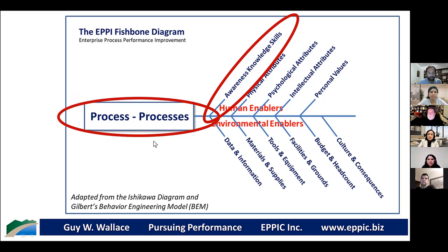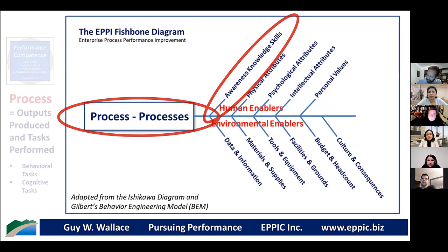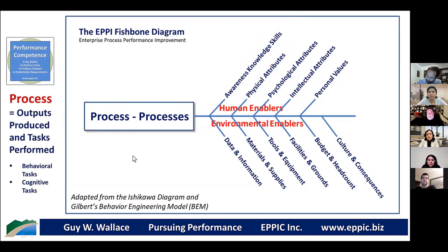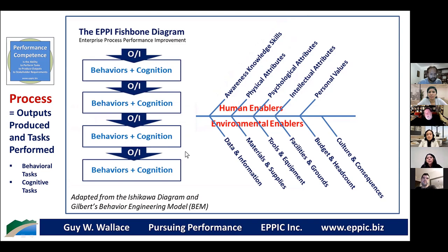How else can we determine what people need to know or be able to do unless we understand the performance context — the process or processes? Over the past four decades, processes have been known as work streams and are more currently known as workflows, but it's all the same thing. There are two types of tasks people perform in processes. The process is outputs, which are inputs to the next step, where behaviors and cognitive tasks are performed to produce the next output, which is an input downstream.